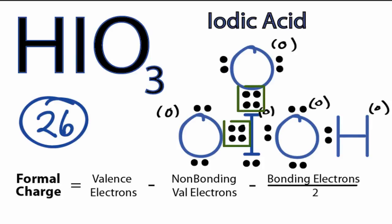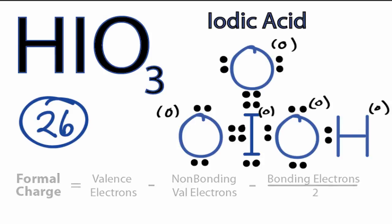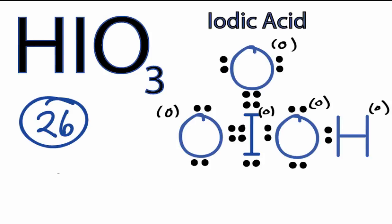So by forming those two double bonds, we now have formal charges of 0 on all of the atoms. That makes this a more likely Lewis structure. You also can see that iodine now has more than an octet. But because iodine is below period 2, row 2, on the periodic table, that's okay. It can have an expanded octet. So this really is the best Lewis structure for HIO3.